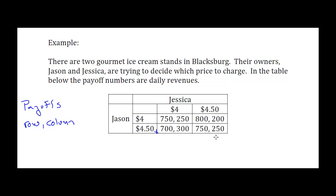Let's look at the outcome 750 and 250. If Jason changes from $4.50 to $4, he goes from 750 to 800, so he would like to do that. But also from Jessica's point of view, if Jason's going to continue to pick $4.50, then Jessica would like to switch from 250 to 300, because that gives her 50 more. So that's definitely not a Nash Equilibrium.